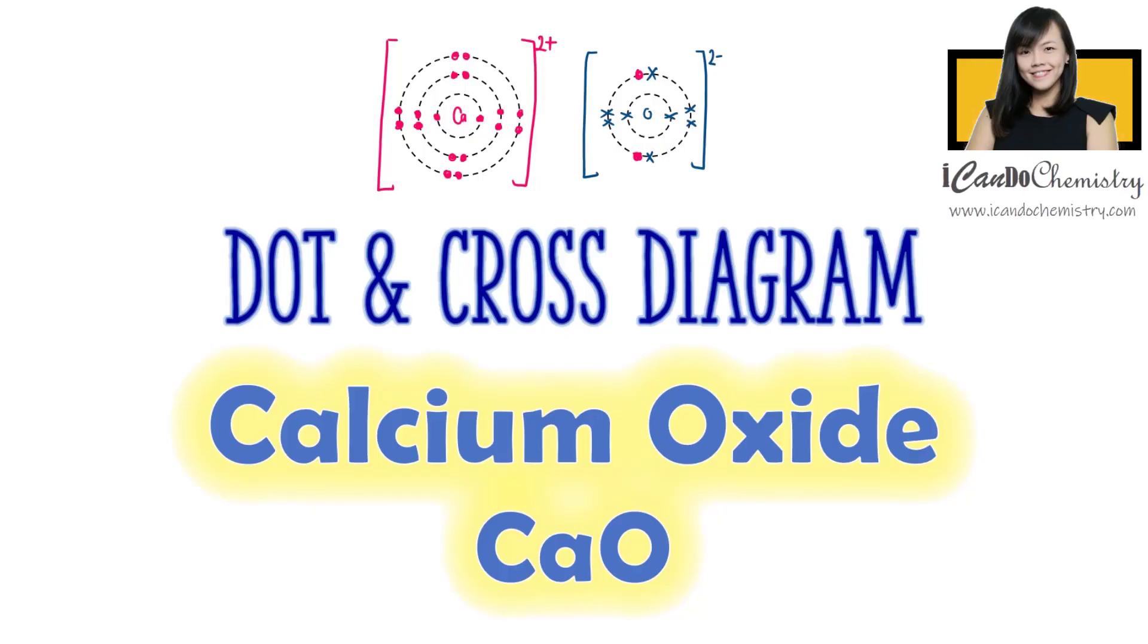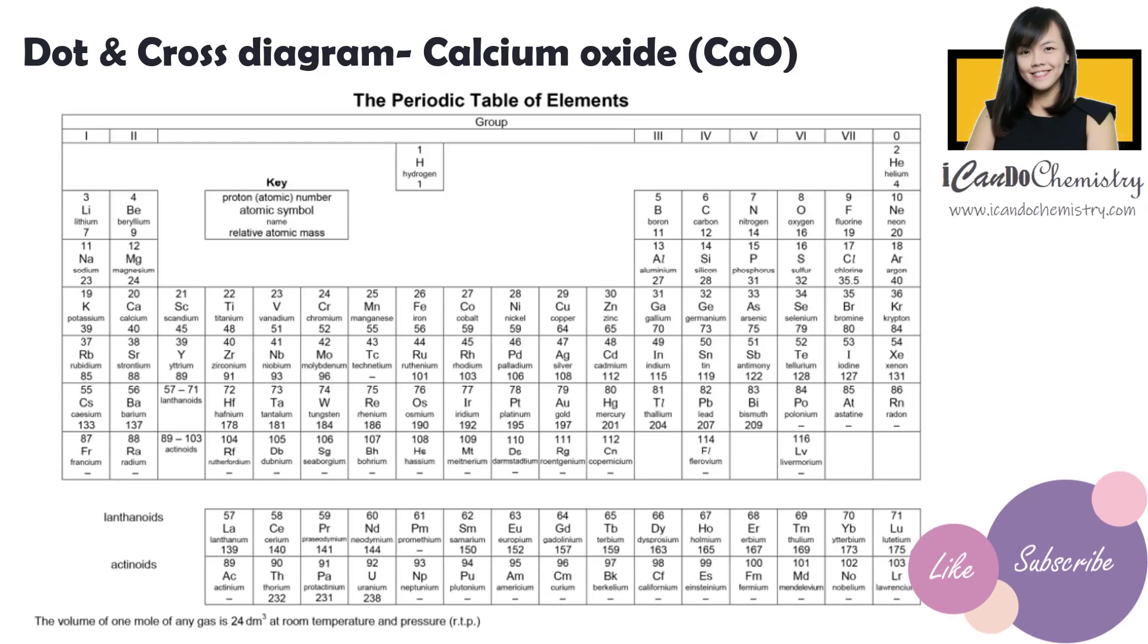In this video, we will focus on dot and cross drawing of calcium oxide ionic compound. Let's refer to the periodic table. We can determine the number of electrons each atom has from the periodic table.